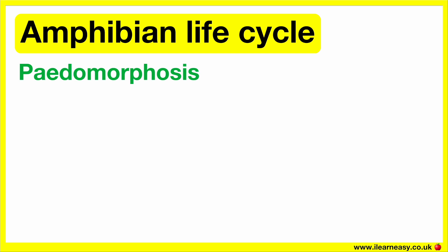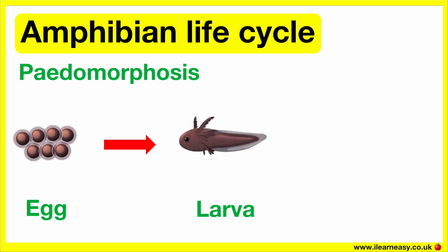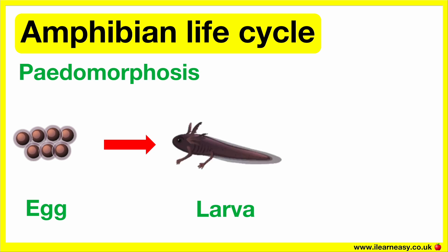The life cycle of an amphibian that goes through paedomorphosis consists of two stages: egg and larva. The life cycle of a salamander is an example of paedomorphosis. This is because the salamander retains its larval traits even at its adult stage, and therefore it doesn't change much from its larval stage.